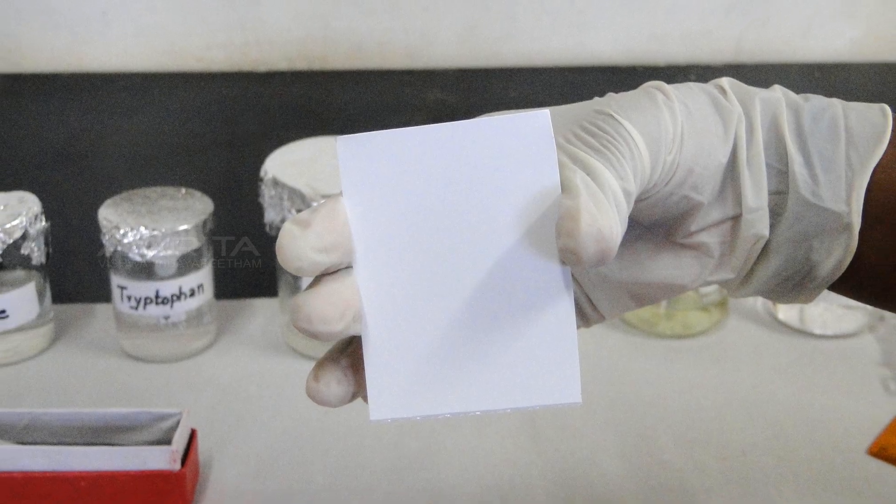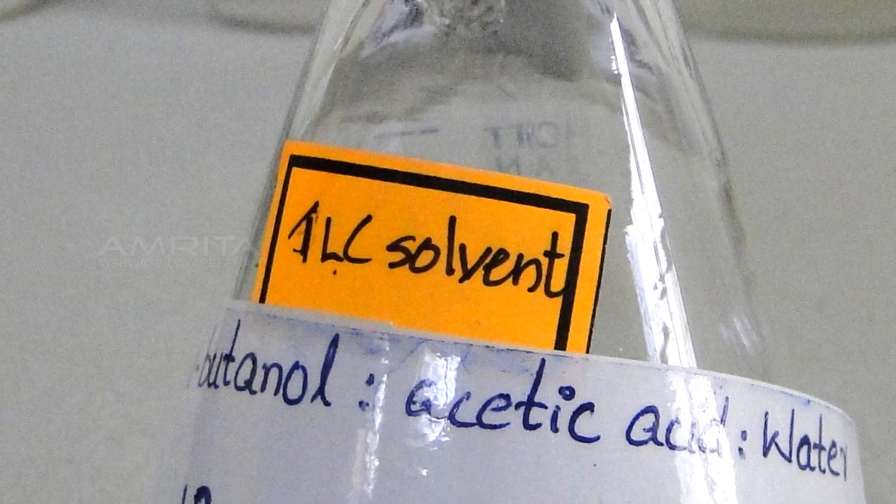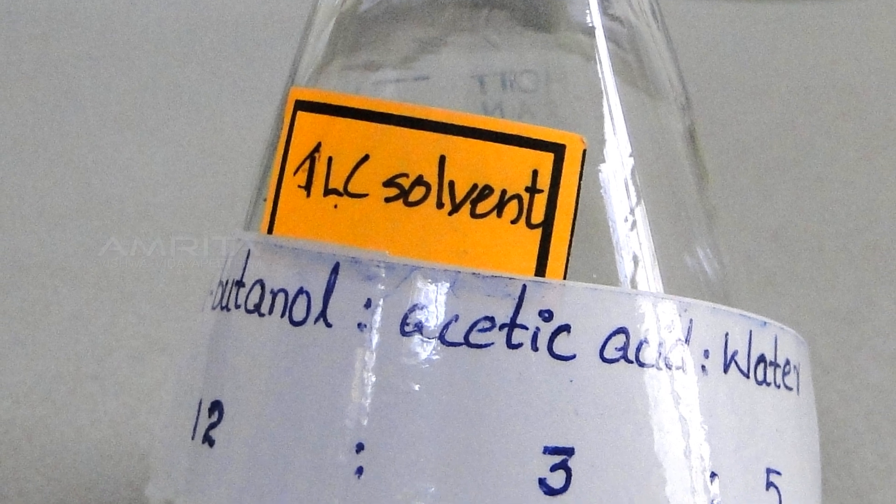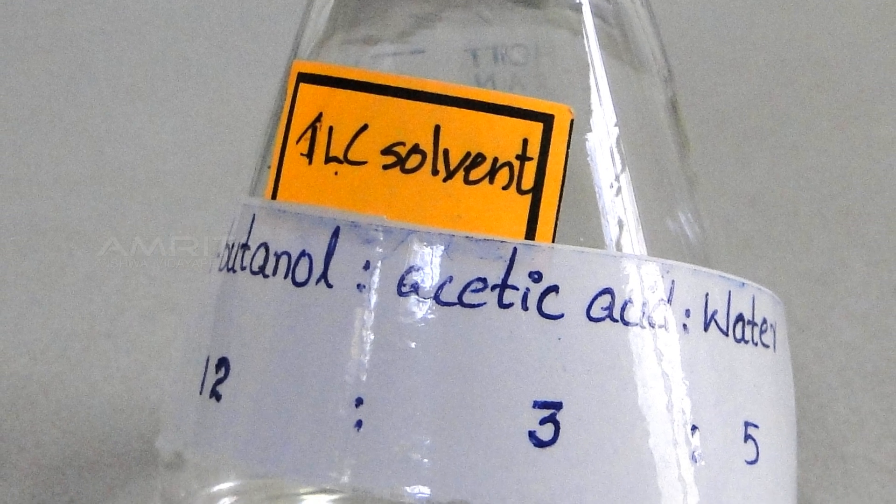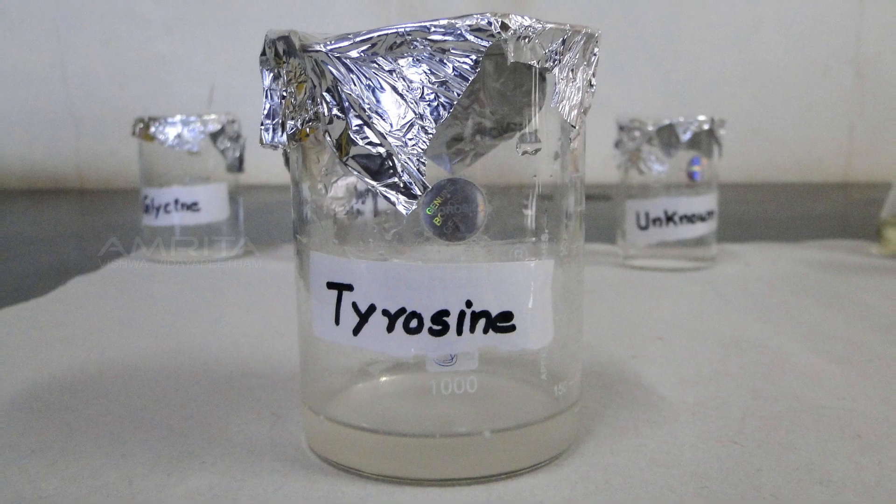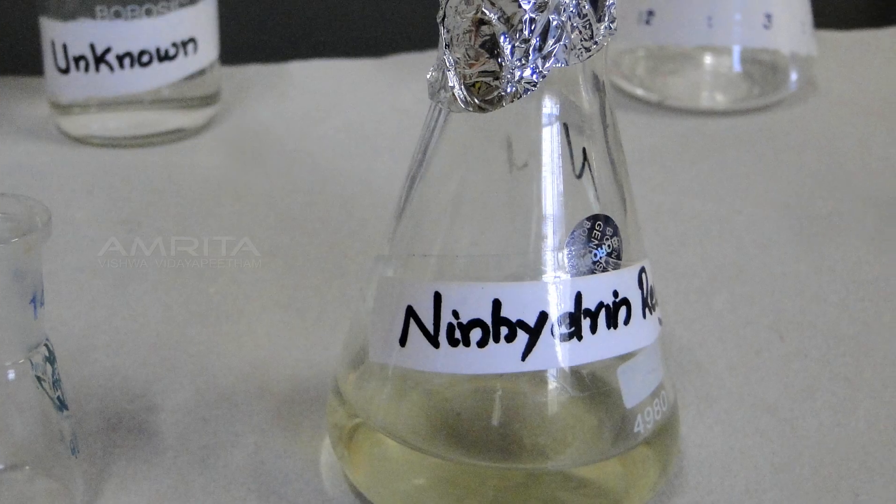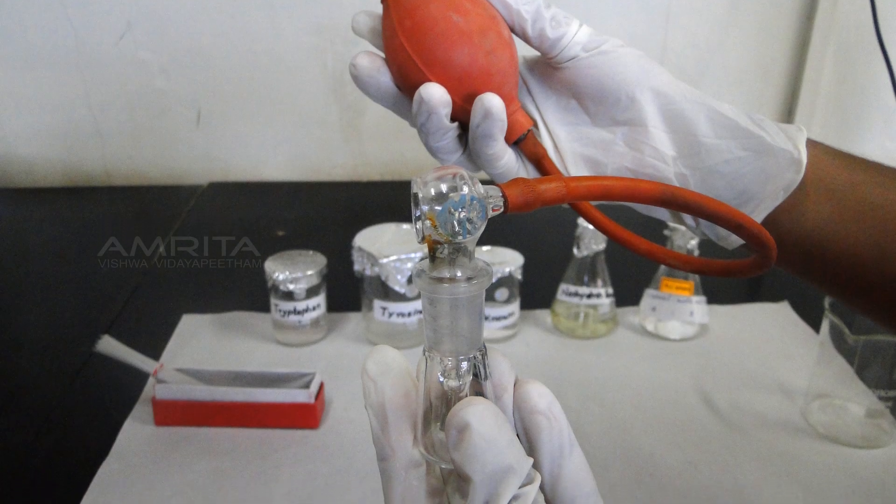Apparatus: TLC plate, solvent - a mixture of N-butanol, acetic acid, and distilled water in the ratio 12:3:5, three known amino acids, an unknown mixture of amino acids, ninhydrin, a spray bottle, and a blow dryer.